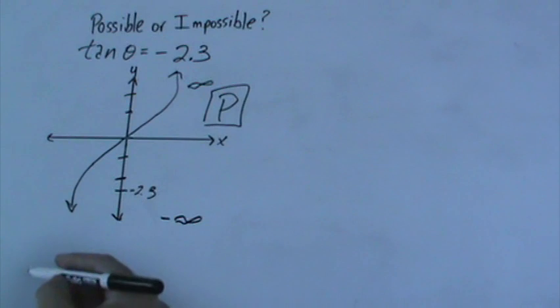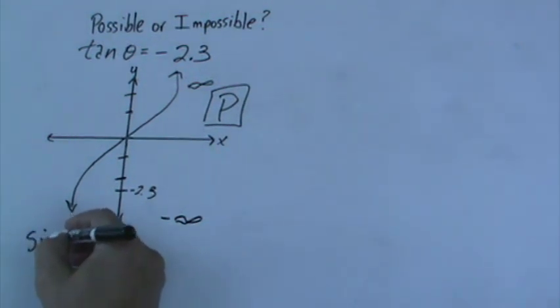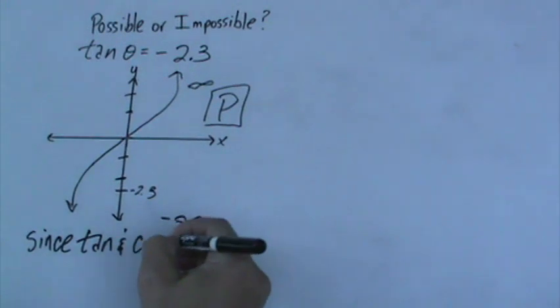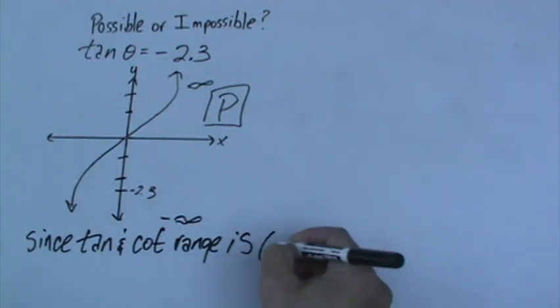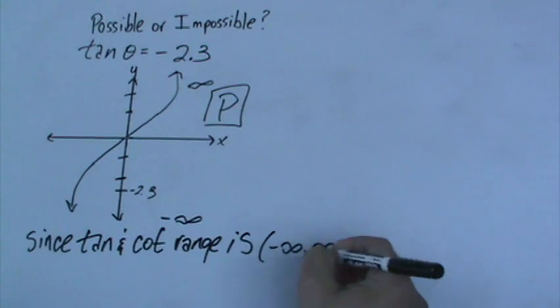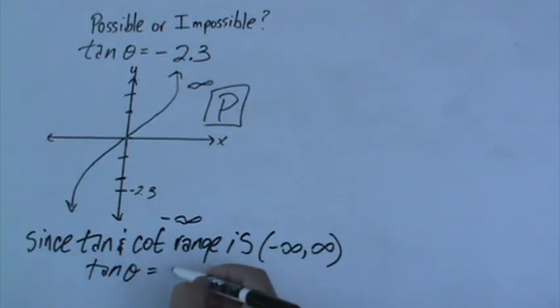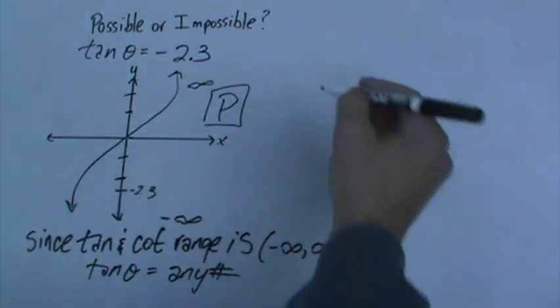And a good way to remember is just think that since tangent and cotangent range is negative infinity to infinity, tangent of theta could be any number. Now let's do another one.